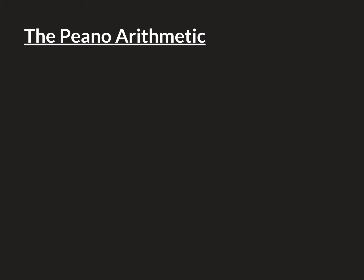Let's begin with addition by recalling content from the previous video — specifically how we defined the addition law on the natural numbers. We'll draw out an addition composition table with the first five natural numbers along each axis, and then define all the entries.